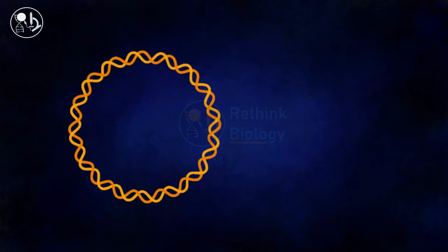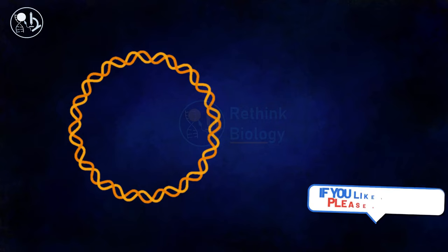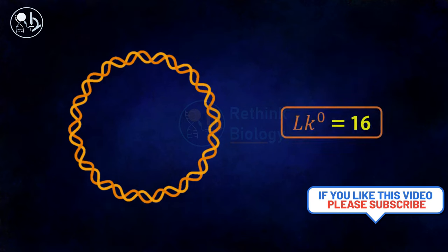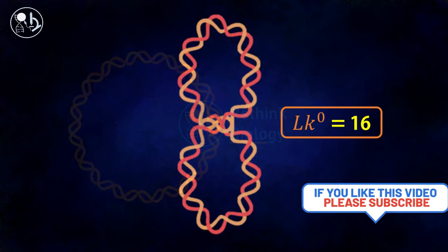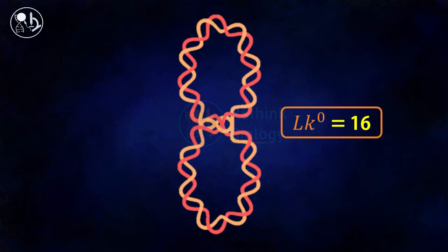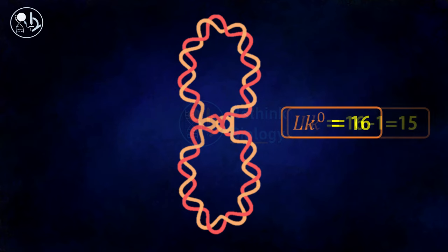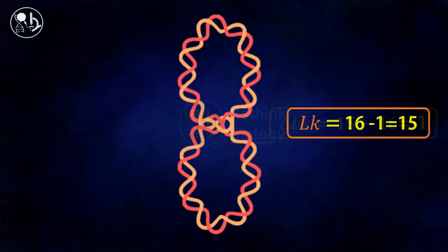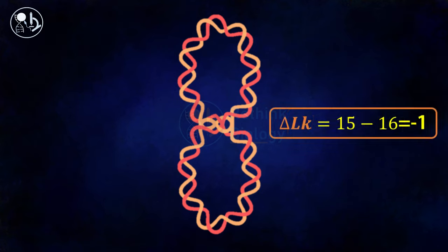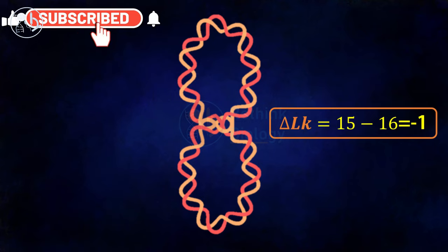Take this DNA as an example. Here the Lk0 is equal to 16. When it is supercoiled, the Lk will become 16 minus 1 equals to 15. So the linking difference will be 15 minus 16, that's equal to minus 1, and that means the DNA is negatively supercoiled.